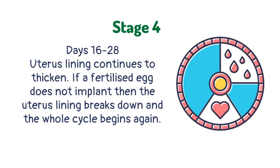During days 16 to 28, the uterus lining continues to thicken. If a fertilized egg does not implant, then the uterus lining breaks down and the whole cycle begins again.